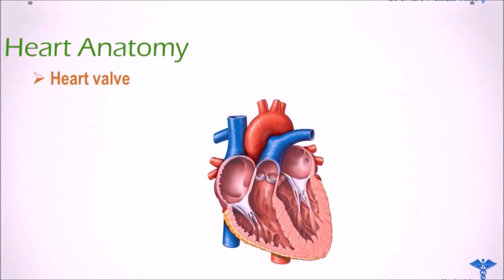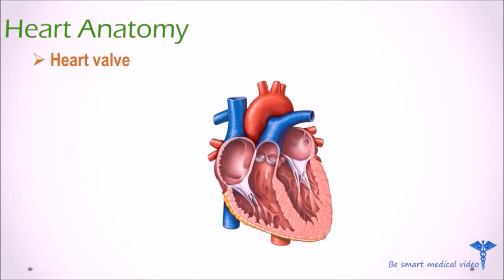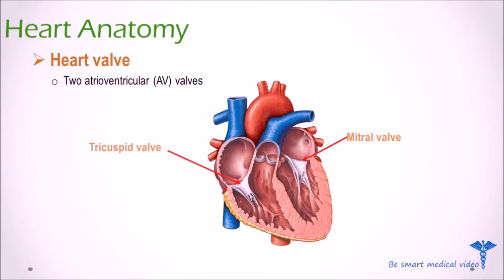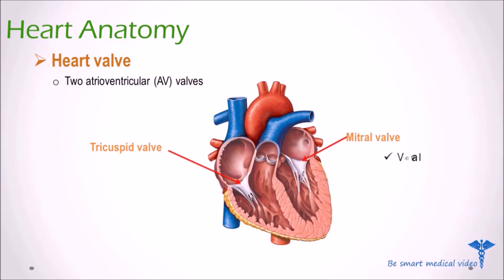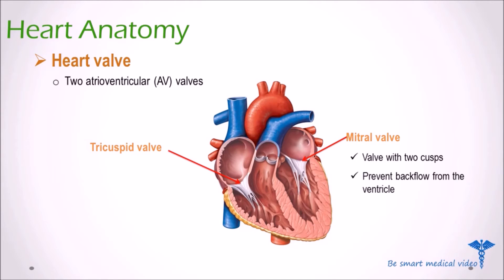Now we will discuss about heart valves. There are four main valves in the heart. Two atrioventricular or AV valves: number one is the mitral valve or bicuspid valve, and second is the tricuspid valve. The mitral valve, with two cusps, lies between the left atrium and the left ventricle, and prevents backflow from the ventricles into the atria during systole.